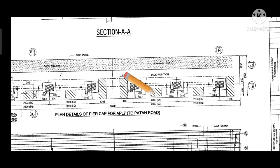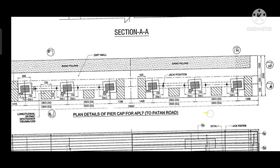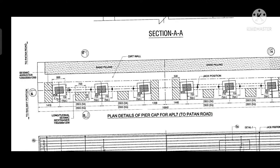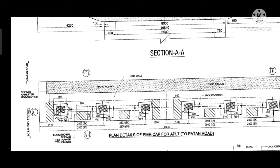Next I will show you the seismic restrainer and arrestor, which is the construction between the two pedestals. The main function of the restrainer and arrestor is to protect against overturning of the girder when a seismic event occurs. At that time it will provide safety from overturning.